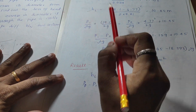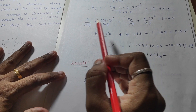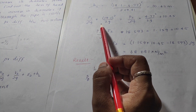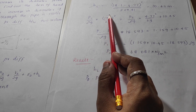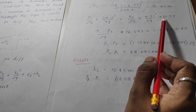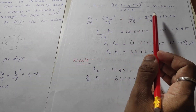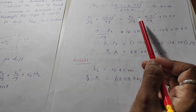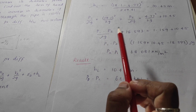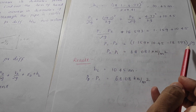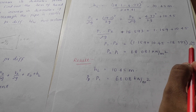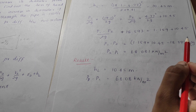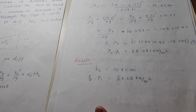From V1 and V2, you can easily find the head loss. Then find the pressure difference: P1 minus P2 divided by ρg. Since it is a horizontal pipe, Z1 and Z2 cancel out. Substituting the known values of V1, V2, and head loss, and using the density of water, you can easily find the pressure difference.